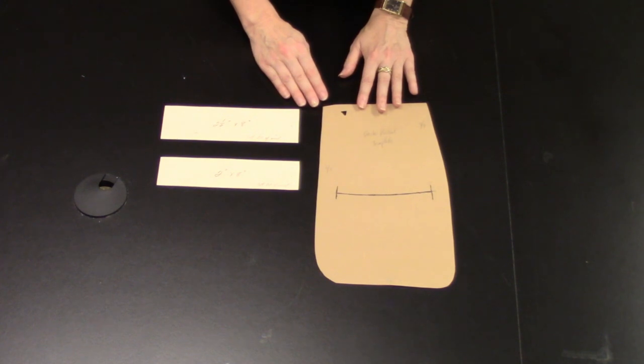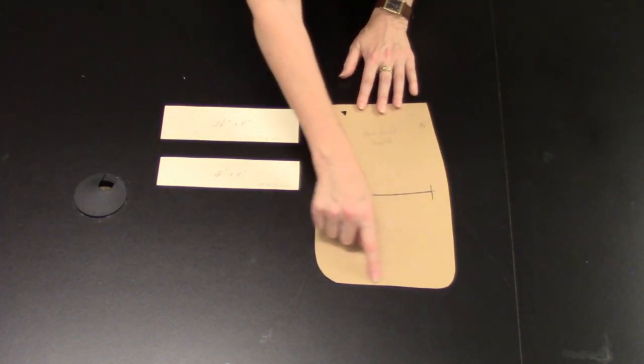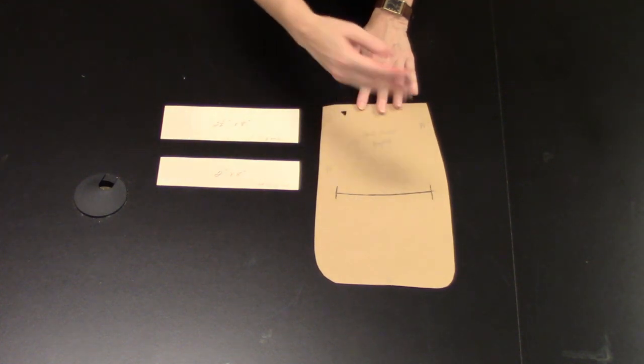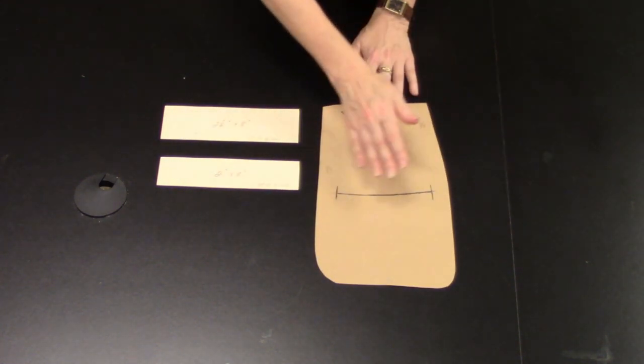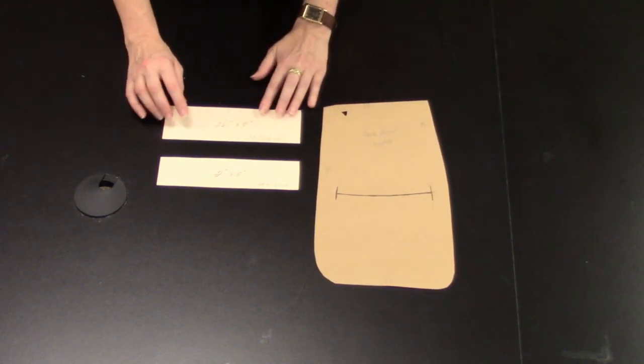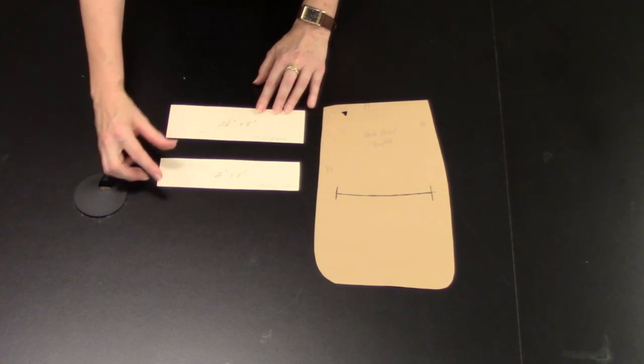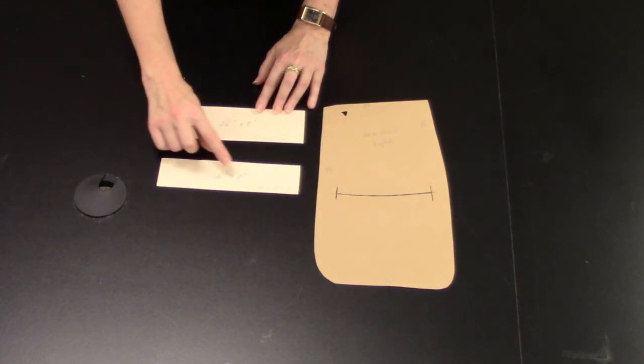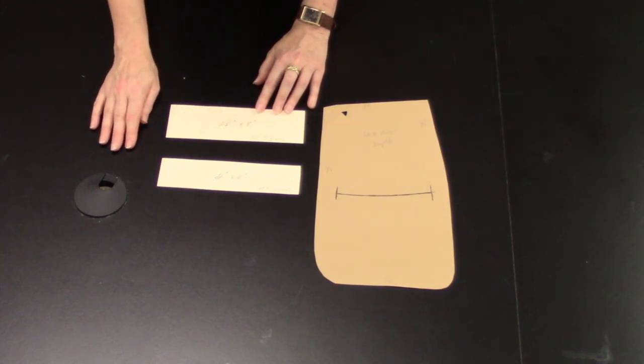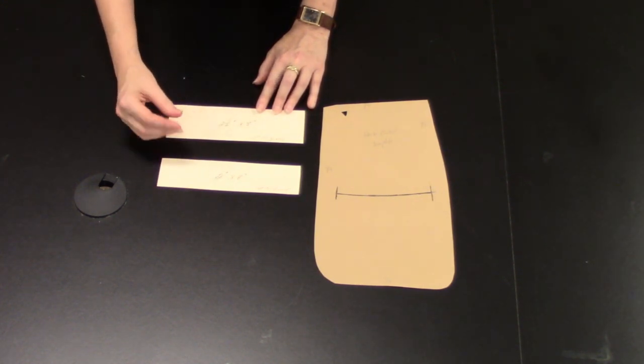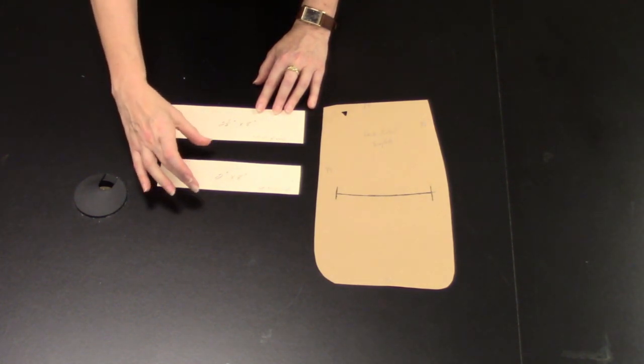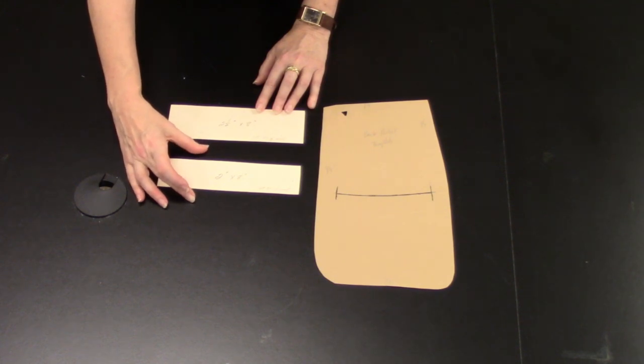Here are the pattern pieces you would be using. This is the pocketing, the poly cotton or cotton pocketing. You would cut two of these for each pocket, so if you have pockets on both sides you'd be cutting four. Then you would want to cut two pieces of wool for each pocket, two inches by eight inches and two and a half by eight inches. The book says to cut them a little bit narrower. I find beginning tailors who are still getting their tailor's fingers have more success with a little bit wider fabric.